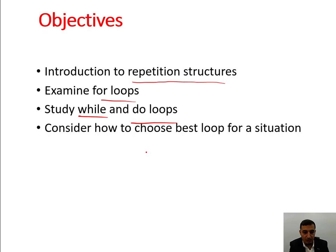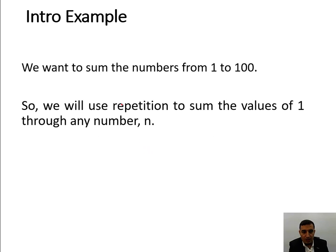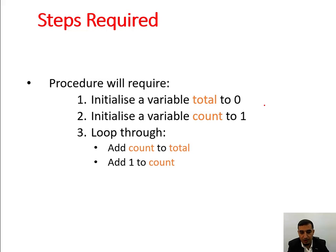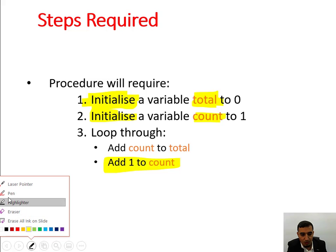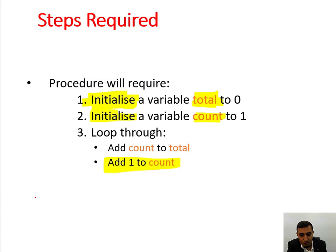Assume that we want to sum the numbers from 1 to 100. We will use repetition to sum the values from 1 to any given value. First, remember a few things: you need to always initialize your variable — from where you want to start counting, the total value, and the counting. When it comes to repetition, there are three things to think about.